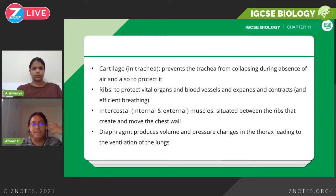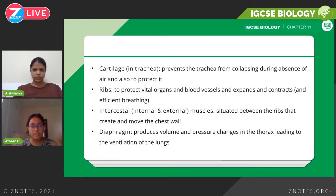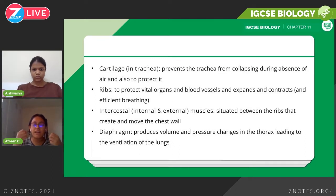Next is the ribs. The main purpose of the ribs is to protect vital organs and blood vessels. The ribs also expand and contract when you're breathing in and out — you can notice the movement in your rib cage. Next we have the intercostal muscles — internal and external intercostal muscles specifically. These are the muscles that help our ribs expand and contract, situated in between the ribs to move the chest wall.